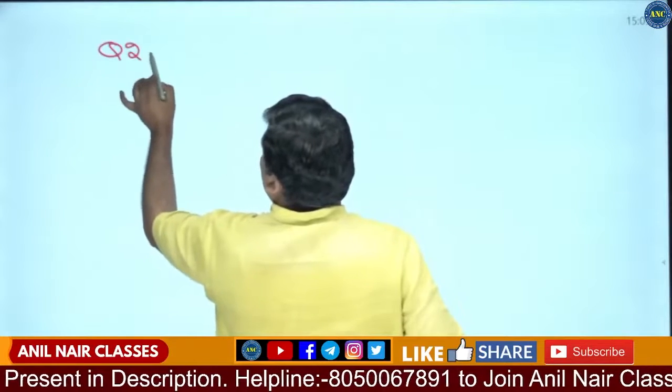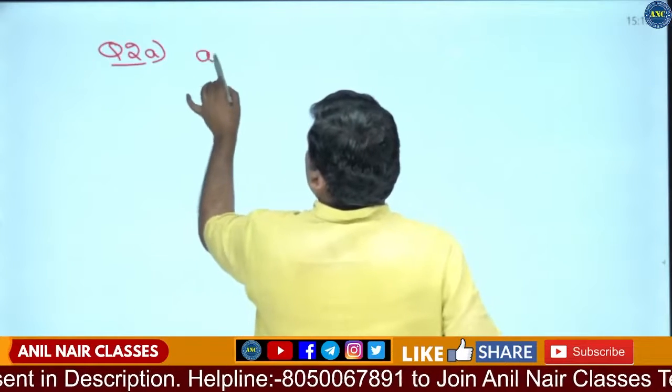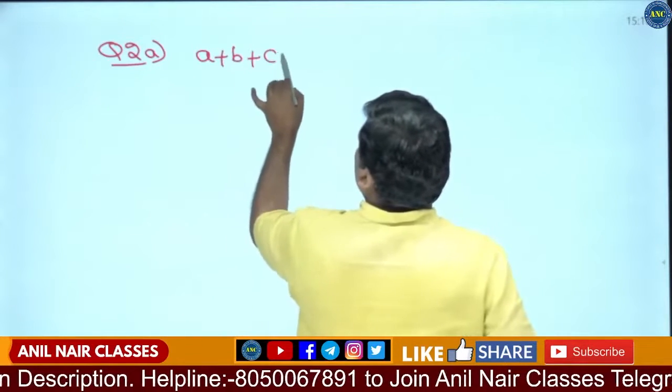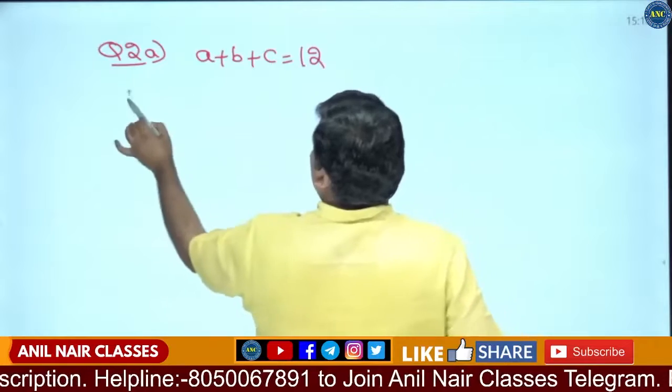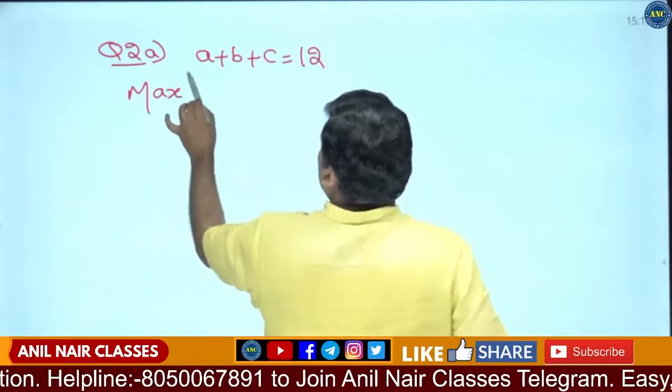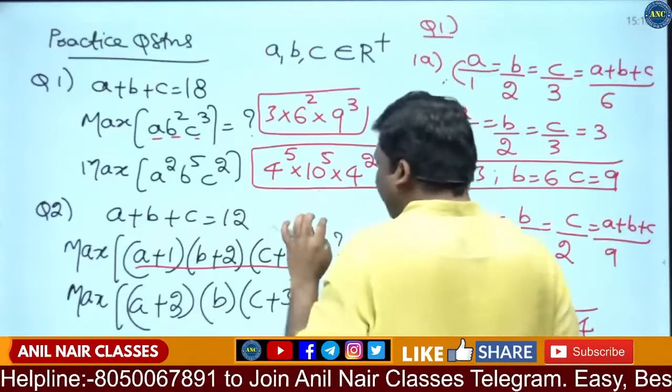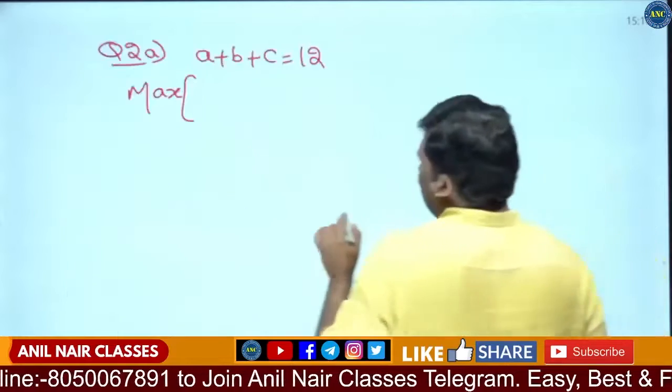Question 2A: A plus B plus C is given as 12. Maximum of A plus 1, B plus 2, C plus 3.